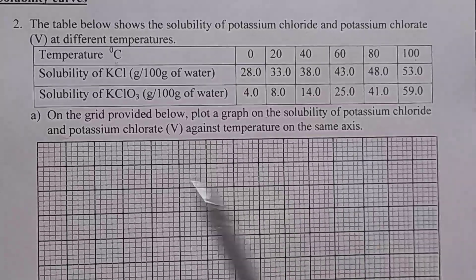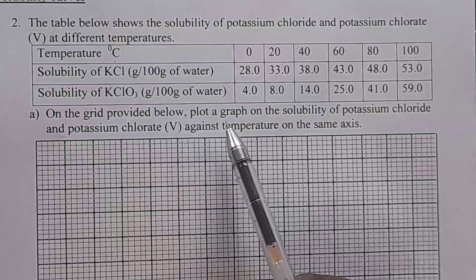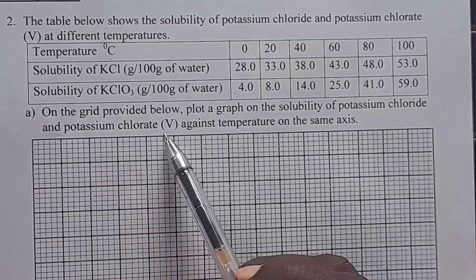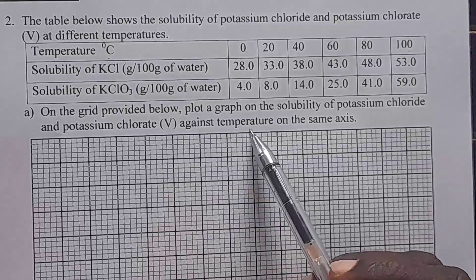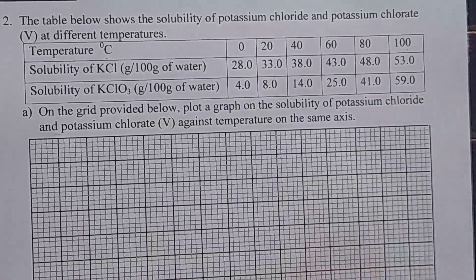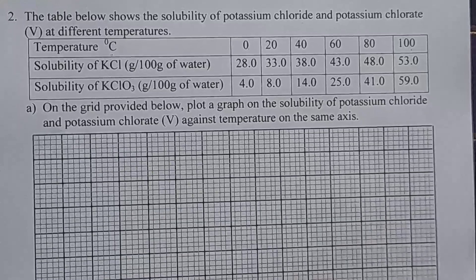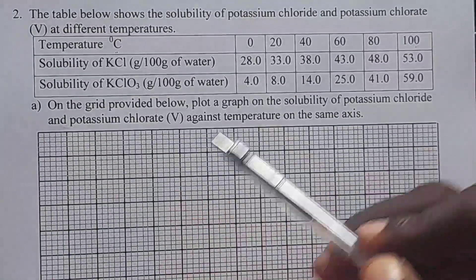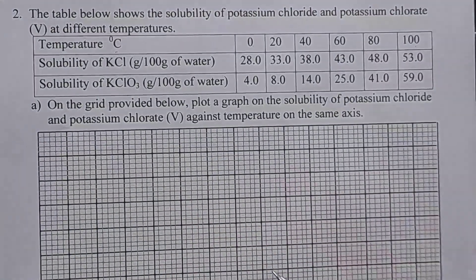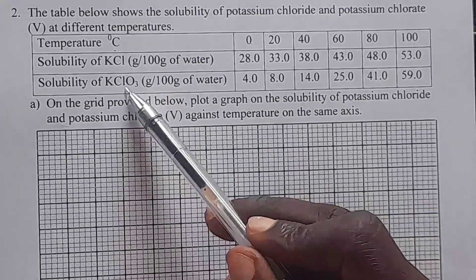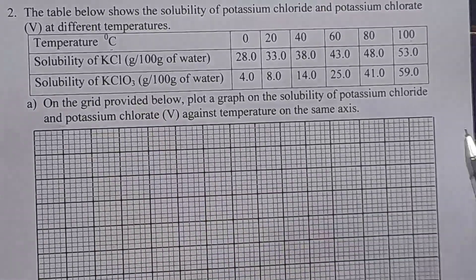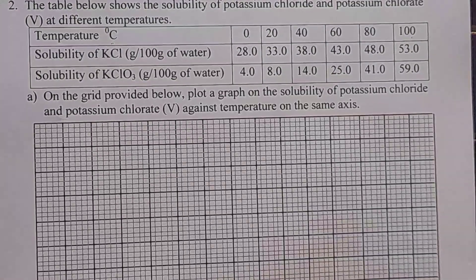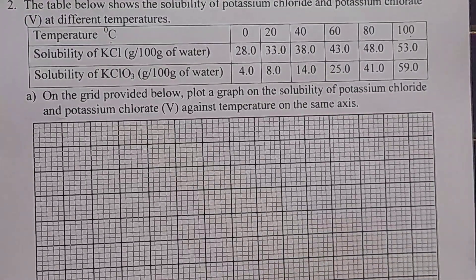For question A, we are told on the grid provided below, plot a graph of the solubility of potassium chloride and potassium chloride 5 against temperature on the same axis. Previously we were drawing only one curve, but here we are given two sets of data, so we are expected to draw two curves on the same Cartesian plane.